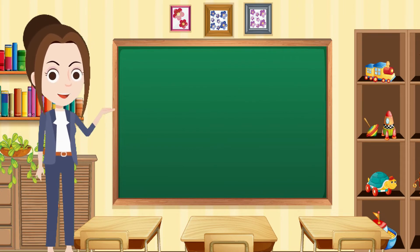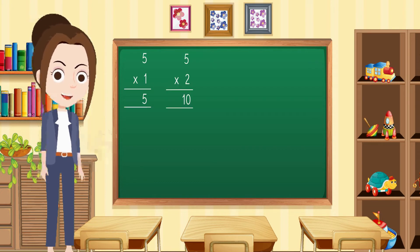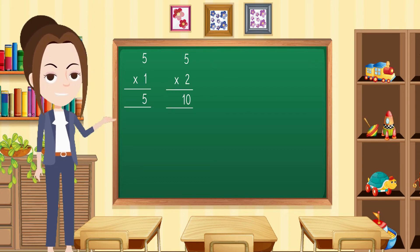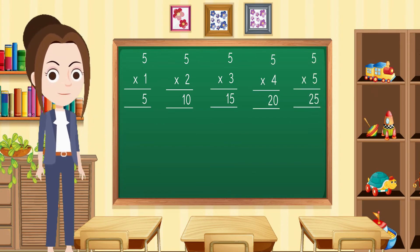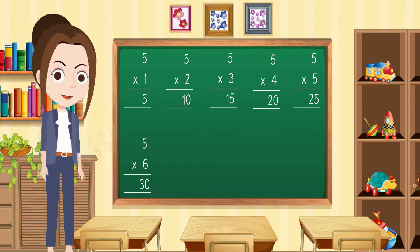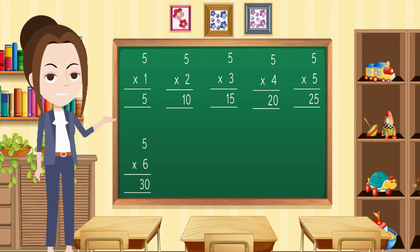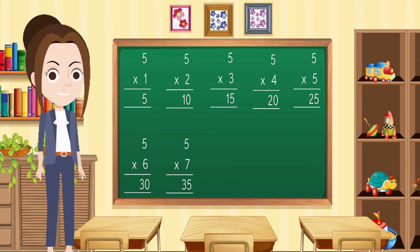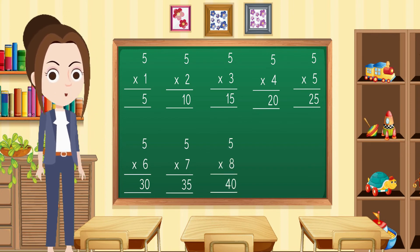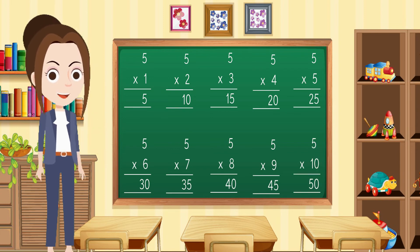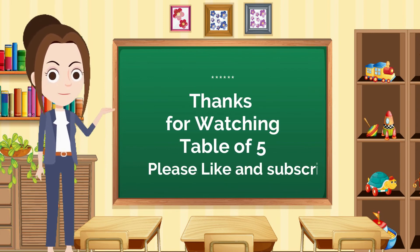Now we will learn the multiples of five. Five multiply by one is five. Five multiply by two is ten. Five multiply by three is fifteen. Five multiply by four is twenty. Five multiply by five is twenty-five. Five multiply by six is thirty. Five multiply by seven is thirty-five. Five multiply by eight is forty. Five multiply by nine is forty-five. Five multiply by ten is fifty.